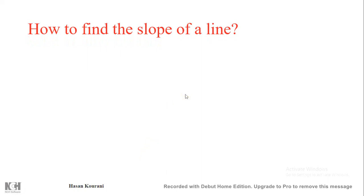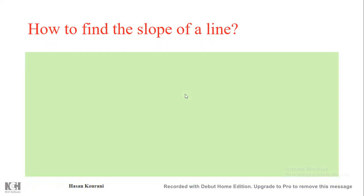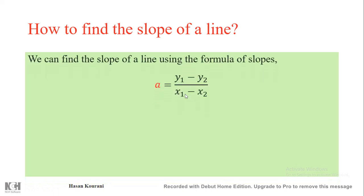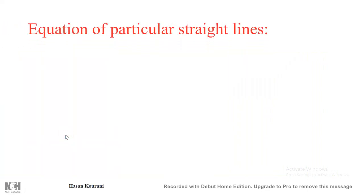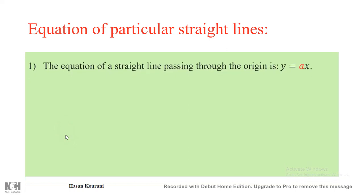To find the slope of a line from two points lying on it, we use the formula: a = (y₁ − y₂) / (x₁ − x₂), where (x₁, y₁) and (x₂, y₂) are the coordinates of two points on the line.